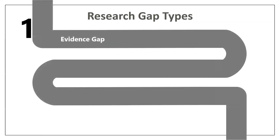The very first one is the evidence gap, which means contradictory results. The results carried out from the previous studies in their conclusions are right, but when examined with another method in the future, they might give different results. When that happens, there arises a small contradictory gap, and this type of gap is called the evidence gap.